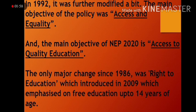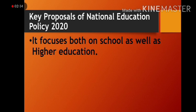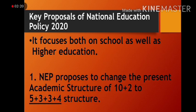The only major change since 1986 was the Right to Education, introduced in 2009, which emphasized free education up to 14 years of age. The key proposals of the National Education Policy focus on both school and higher education. It proposes to change the present academic structure from 10+2 to a 5+3+3+4 structure.